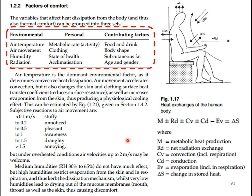We need to understand how human metabolism reacts in terms of heat exchange. The change in stored heat is calculated as metabolic heat production minus net radiation, convection, conduction, and evaporation components — all leading to a change in stored heat.